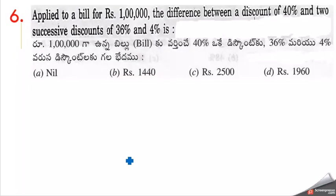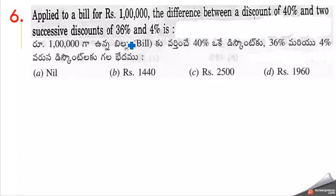Next question. Applied to a bill for 1 lakh rupees, the difference between a discount of 40% and two successive discounts of 36% and 4% is?